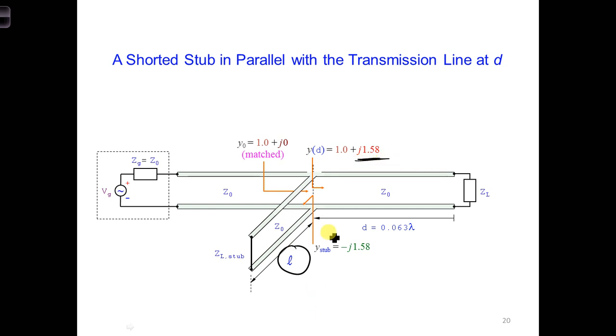So in other words, we can call this a stub. We want Y stub, as you look this direction down the stub, to equal minus J1.58. So if you add this to the positive J1.58 we have from looking down this way, they will cancel.